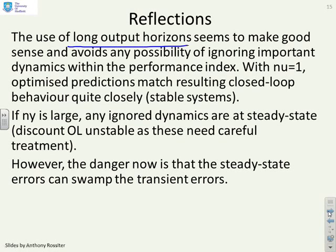Generally then, if you use long output horizons, they seem to make good sense for stable open loop systems, and it avoids any possibility of ignoring dynamics. Remember in the previous video we noticed we were ignoring dynamics, and that caused a problem. With large ny, none of the dynamics are ignored, and that's good. If, in parallel, you use nu equals 1, then the optimized predictions will match the resulting closed loop behavior quite closely for stable systems, so you've now got a fairly well-posed optimization, and you're quite happy. Any ignored dynamics are at steady state, and therefore there's nothing to worry about, and we're obviously not talking about unstable systems here, but here's the problem.